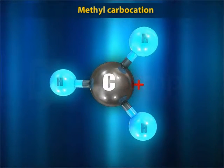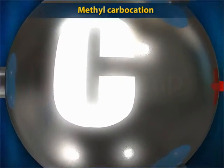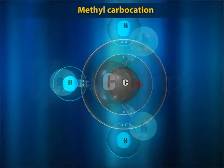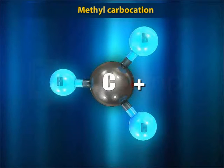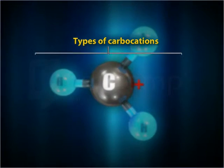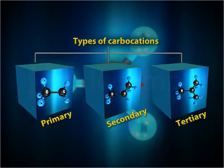Carbocation is a chemical species bearing a positively charged carbon atom with only 6 electrons in the valence shell. The simplest carbocation is methyl carbocation, having only one positively charged carbon atom which is linked to 3 hydrogen atoms. Carbocations are classified as primary, secondary, and tertiary depending upon the link of the positive carbon atom with 1, 2, and 3 carbon atoms respectively.